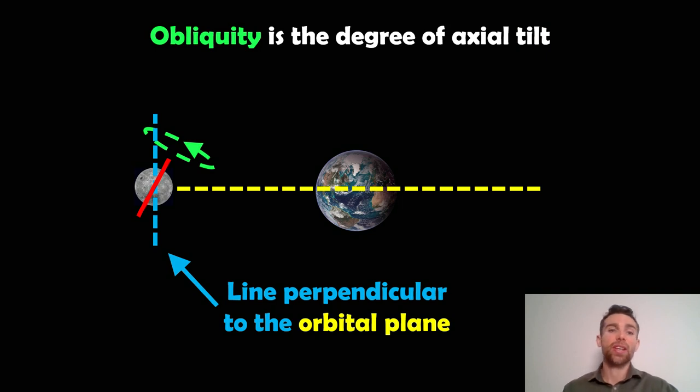That relative tilt, your axial tilt, goes from the line that's perpendicular to the orbital plane. That dashed blue vertical line is perpendicular to your orbital plane as it goes around the Earth. We're using the Earth-moon system here. The obliquity is the degree of axial tilt from that line there. If there's no tilt, then it would be zero and it would be aligned to that perpendicular line from the orbital plane.